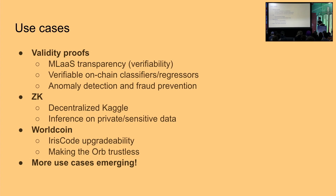Another use case is anomaly detection or fraud prevention. Many models are built to detect anomalies or fraudulent transactions. You can train a model that runs on on-chain activity, and if it finds an anomaly or fraud transaction and labels it, you can have a governance protocol that stops a protocol if fraud is found. The actual protocol can stop if and only if you provide a proof that some model — that people have agreed upon — has indeed found a vulnerability, automatically stopping protocols when someone finds an anomaly.